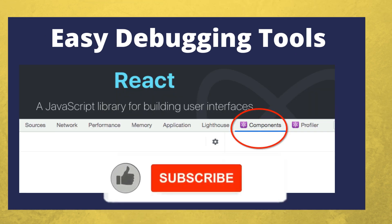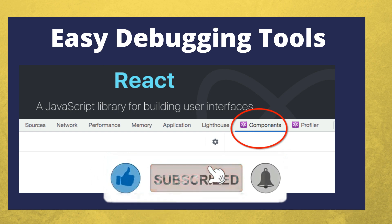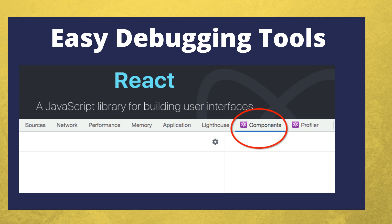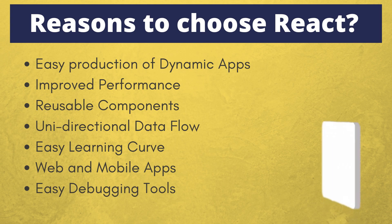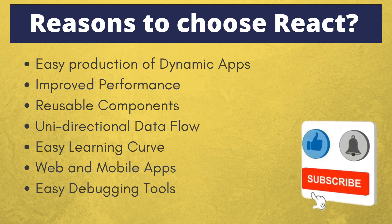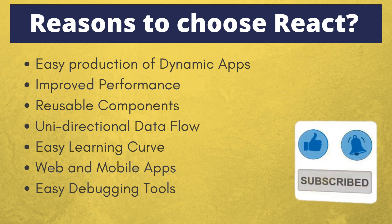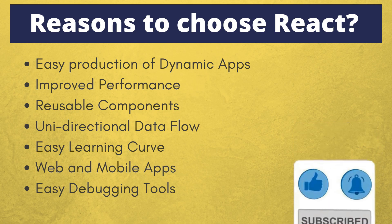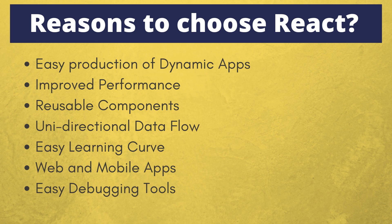Dedicated tools for easy debugging: When we build any application, easy debugging is required. A Chrome extension for debugging React applications has been released by Facebook, making debugging React web applications much faster and easier. These points are more than enough to explain why the React library is so powerful and why so many organizations and enterprises are using it.